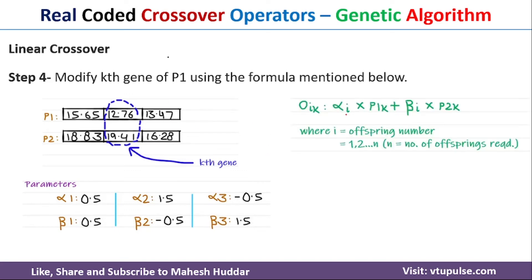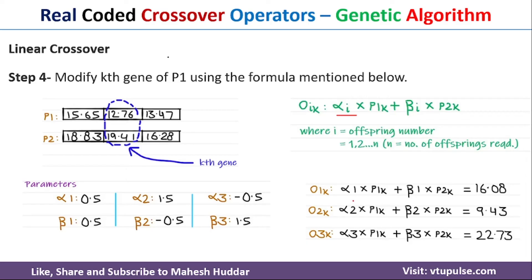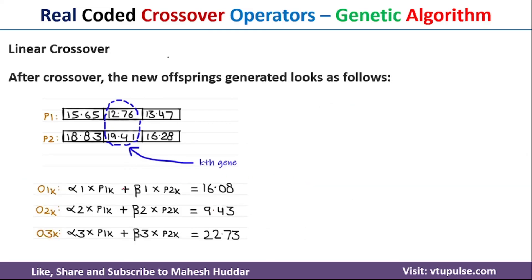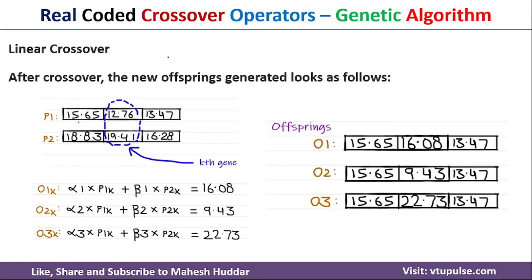The equation for the ith offspring's kth gene is: oik = αi × p1k + βi × p2k. For the first offspring use α1, β1; for the second α2, β2; for the third α3, β3. With p1k = 12.76 and p2k = 19.41, solving gives o1k = 16.08, o2k = 9.43, and o3k = 22.73. These values are placed into the respective chromosomes to produce the three new offspring o1, o2, and o3.